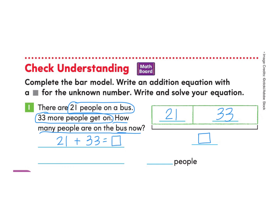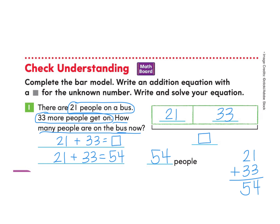Now we solve this equation. I like to write it vertically. In the ones column: 1 plus 3 makes 4. In the tens column: 2 plus 3 makes 5. So 21 plus 33 equals 54. There are 54 people on the bus. Great job.